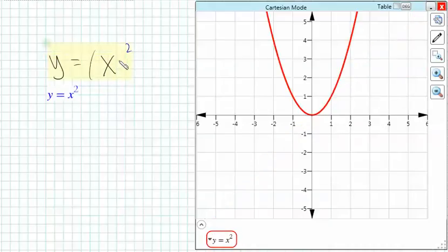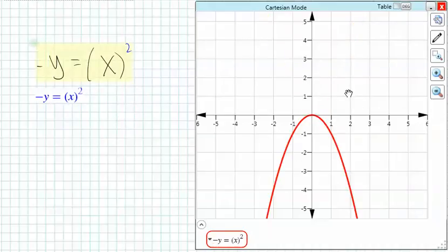So, for instance, if we graph y equals x squared, and we negate the y, it causes a reflection over the x-axis.